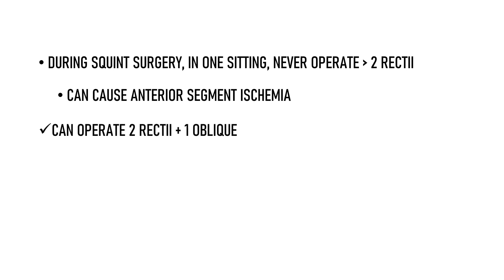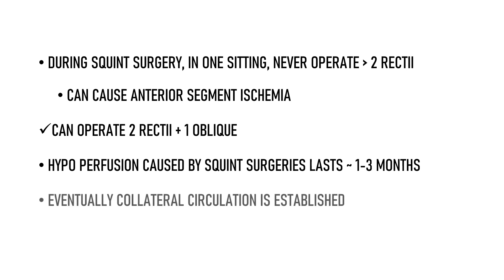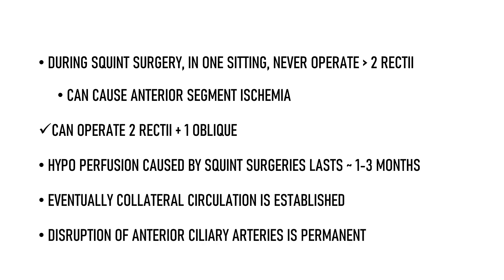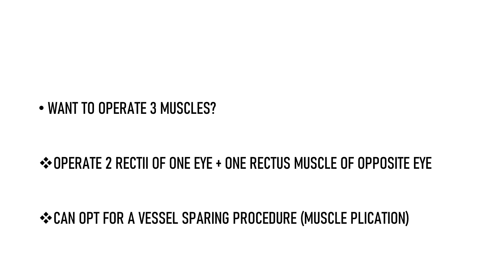Hypoperfusion caused by squint surgeries is eventually compensated by collateral circulation, which may take one to three months. However, disruption of anterior ciliary arteries is permanent and their direct supply is never re-established. If three rectus muscles must be operated on, one option is to operate two recti on one eye and one rectus on the opposite eye, or to choose a vessel-sparing procedure such as muscle plication.